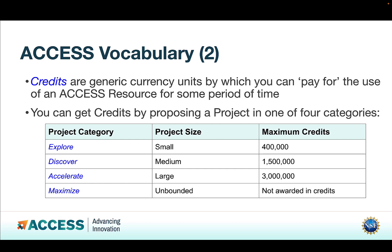Credits are generic currency units you can use to pay for the use of a resource for some period of time. You can get credits by proposing a project in one of four categories. The Explore category is for small exploratory projects, with a maximum of 400,000 credits. The Discover category is for medium-sized projects beyond the exploration stage, with up to 1,500,000 credits. Accelerate is for large, mature projects with a maximum of 3,000,000 credits. And Maximize is for unbounded, massive projects that don't fit the other categories.